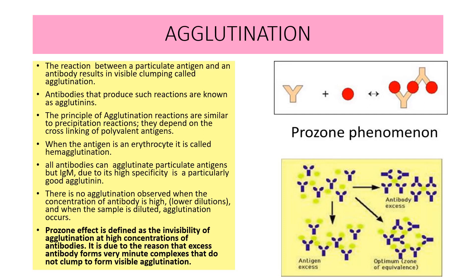There is no agglutination observed when the concentration of antibody is high, and when the sample is diluted, then only agglutination occurs. Here it is very important to mention the prozone effect. Prozone effect is defined as the invisibility of agglutination at high concentration of antibodies. It is due to the reason that excess antibody forms minute complexes that do not clump to form visible agglutination.